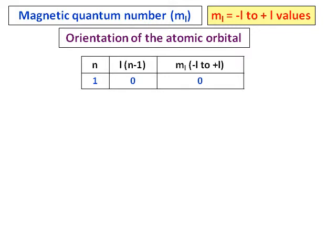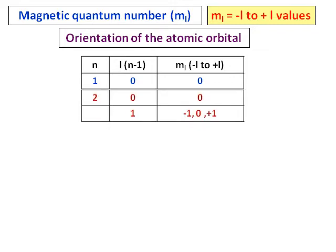Consider the second floor: when n = 2, there are two values for l. For l = 0, there is again a spherical room. But there is another room corresponding to l = 1, and l = 1 can take three values: −1, 0, and +1. So in floor 2, I have one spherical room and three dumbbell rooms in the form of p. That means I have four places in which I can put my electrons — one spherical and three dumbbell rooms.